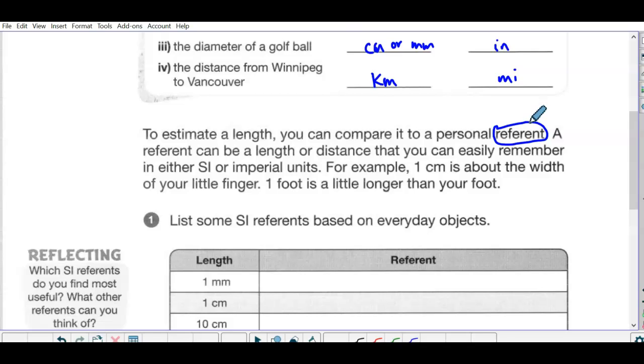It's something personal that you know what that distance is and so you could use it to estimate some measurements. So it can be a length or distance that you can easily remember in either unit. For example, one centimeter is about the width of your little finger. One foot is a little longer than your foot. So list some SI, so that's metric reference based on everyday objects.